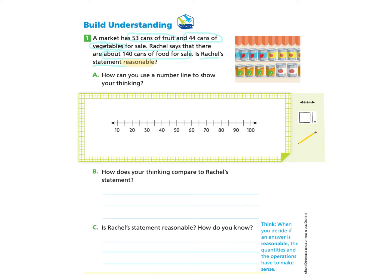Let's start by reviewing the word reasonable. Reasonable means that we can verify the answer by either estimating or solving the equation. So keeping that in mind, we see that there were 53 cans of fruit and 44 cans of vegetables, and Rachel is saying there are about 140 cans of food for sale. It's our job to check and see if the statement is reasonable.